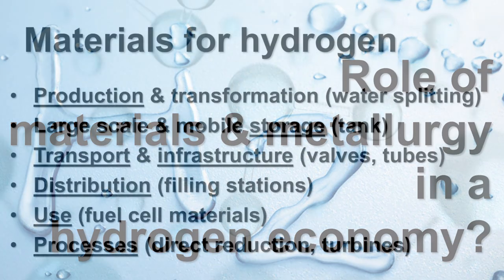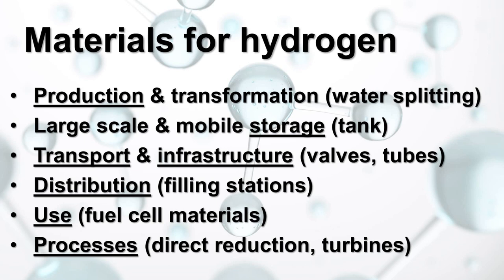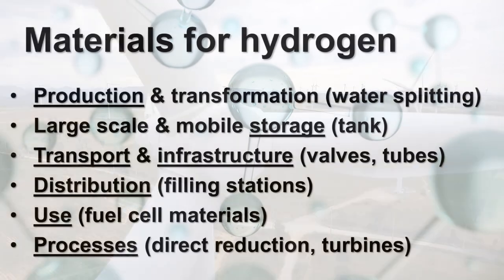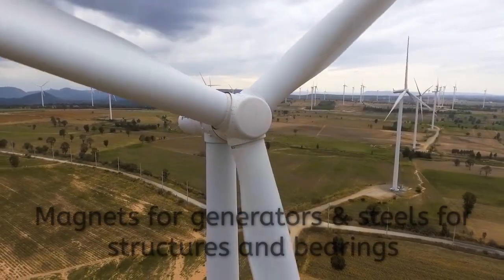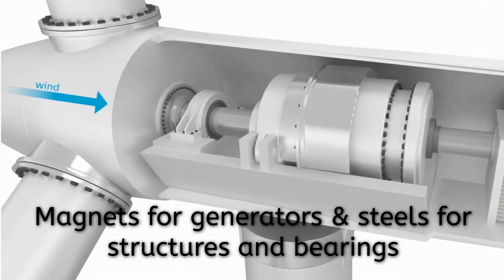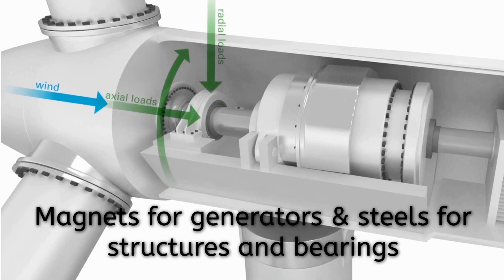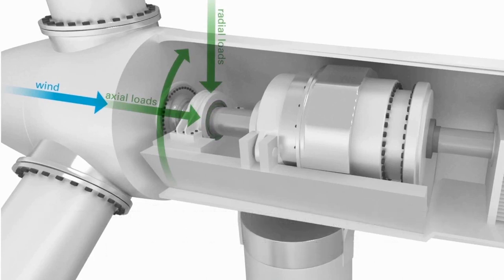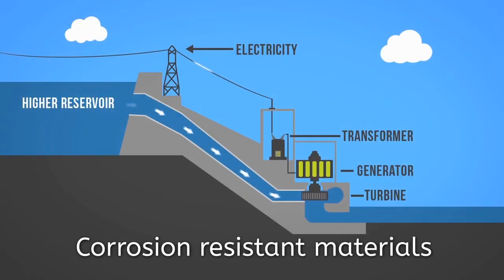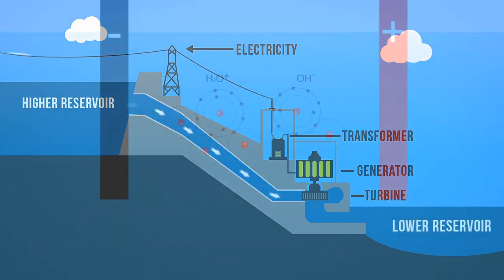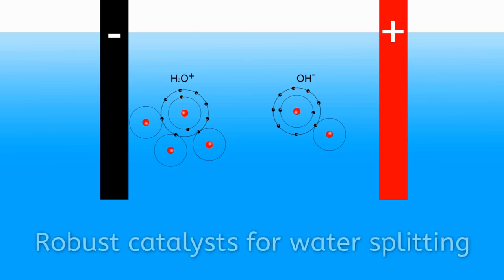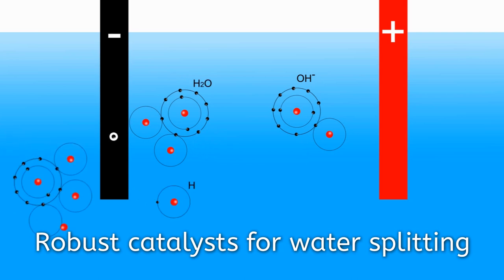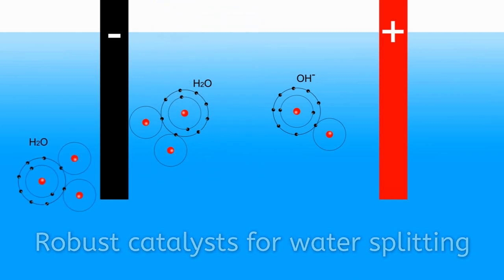There are multiple opportunities for basic and applied materials research in this field. Materials are needed for the production and transformation of hydrogen and its related energy carriers, as well as for their storage, transport, distribution, use, and for all the underlying process and infrastructure parts. A hydrogen-based economy also requires materials to provide the green electrical energy for water splitting — examples are steels for mechanically loaded bearings and offshore constructions of wind turbines, advanced magnetic materials for electrical generators, semiconductors for solar cell absorbers, and corrosion- and abrasion-resistant materials for hydropower plants. New catalyst materials are also needed in the fields of water splitting and ammonia synthesis that must withstand less pure reactants and long-term use.